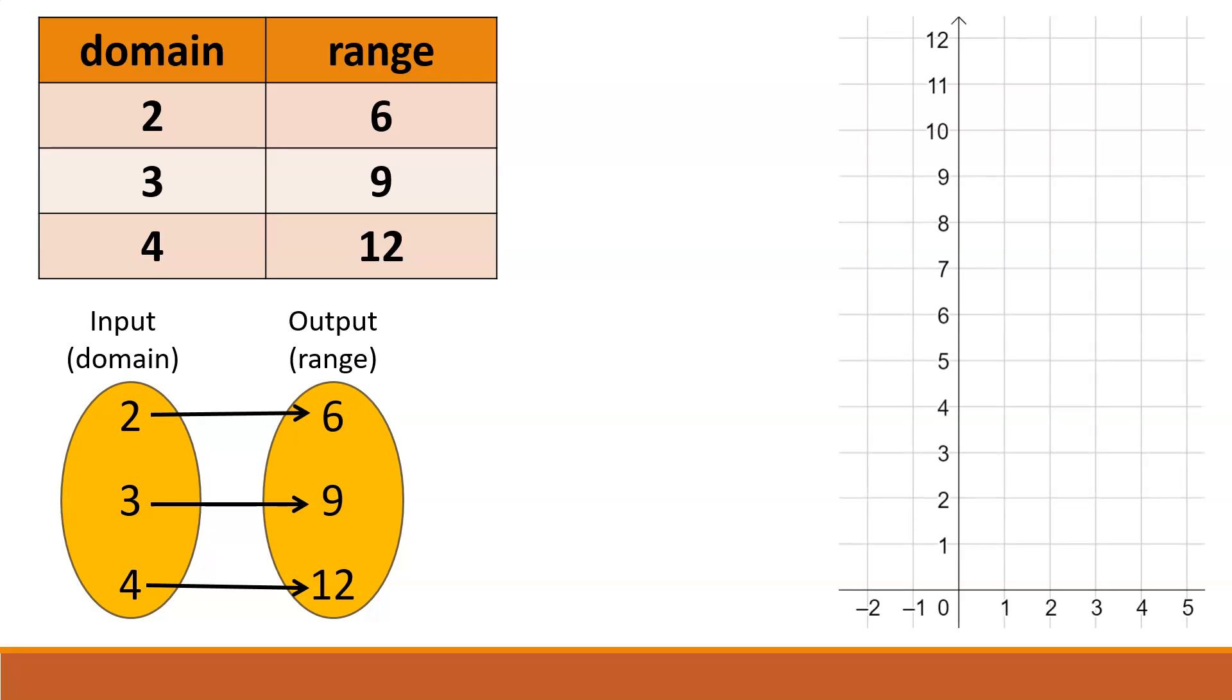Another representation for this relation is a graph, in which the domain and range numbers that are related are x and y coordinates for points on the graph. So in this case, 2, 6 is a point on the graph. The 3, 9 is another point, and the 4, 12 is a third point.